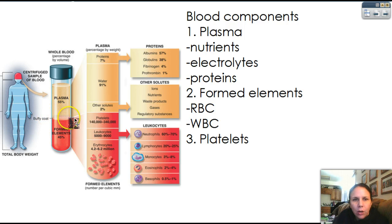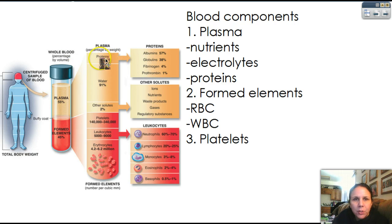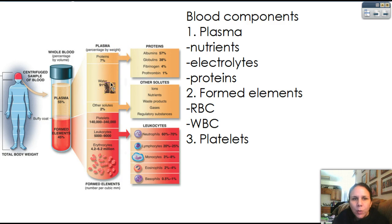In the middle is the Buffy coat, where we find the white blood cells and platelets. And then we have the plasma up here, which contains all the nonliving portions. So this is a really nifty picture I like, because it separates everything out. So if we take a look at the plasma, we can see about 7% of your plasma by weight is proteins. And we'll talk about different types of proteins here in a minute.